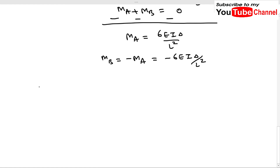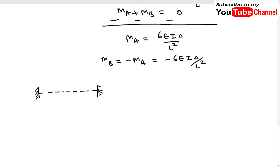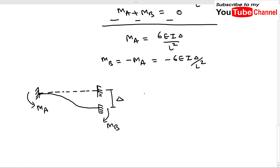We have now obtained the fixed end moments at A and B. One important point: initially we assumed a certain direction for M_A and M_B. However, M_B came out negative, which means we must reverse its assumed direction. The actual direction of M_B is opposite to what was initially assumed.